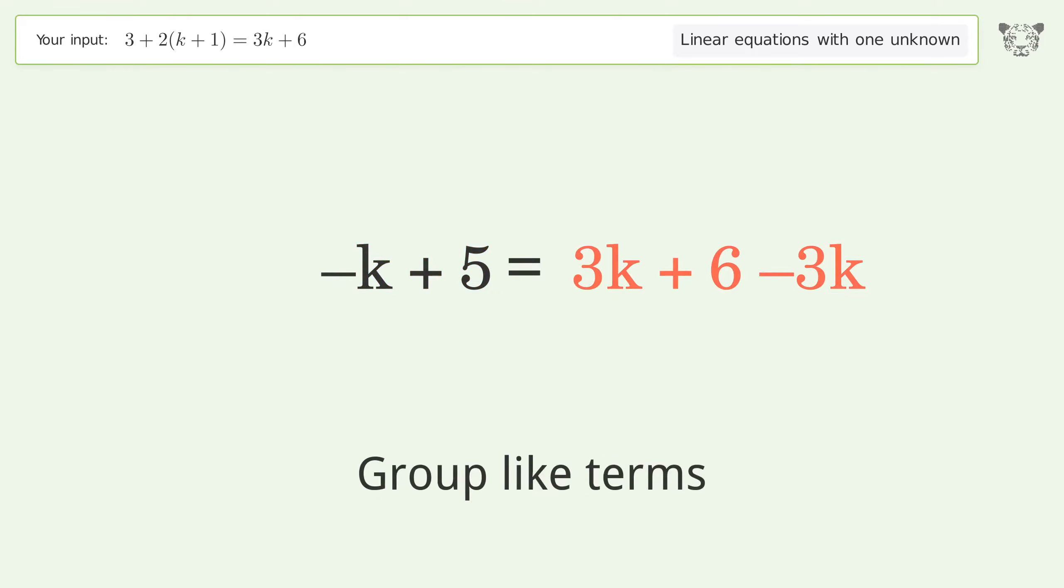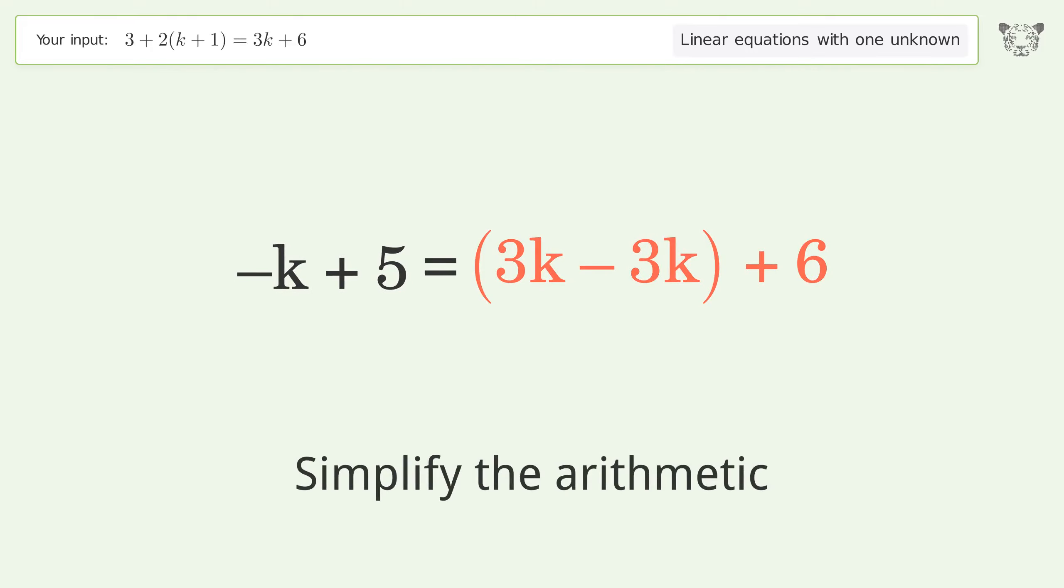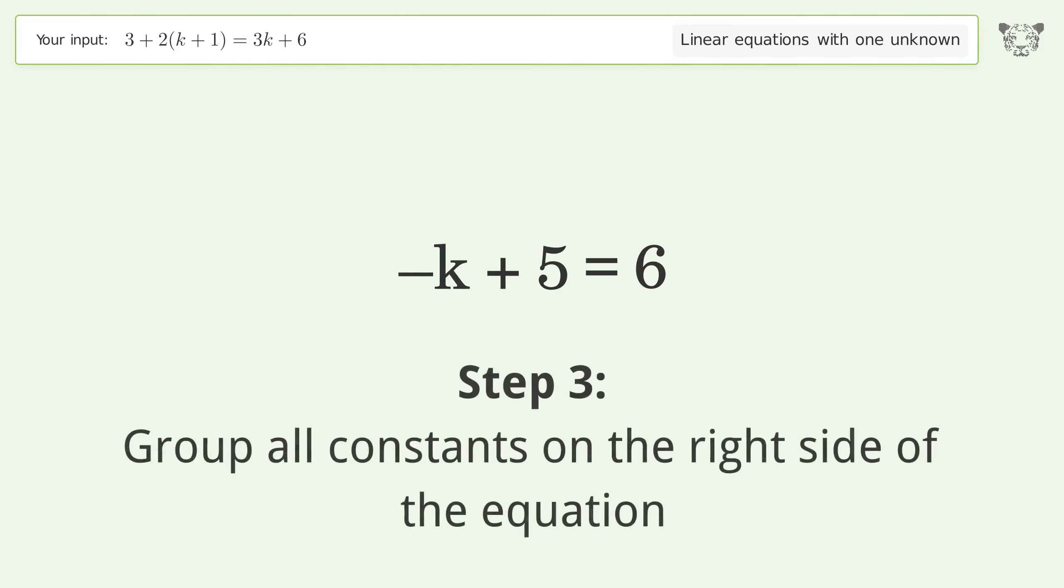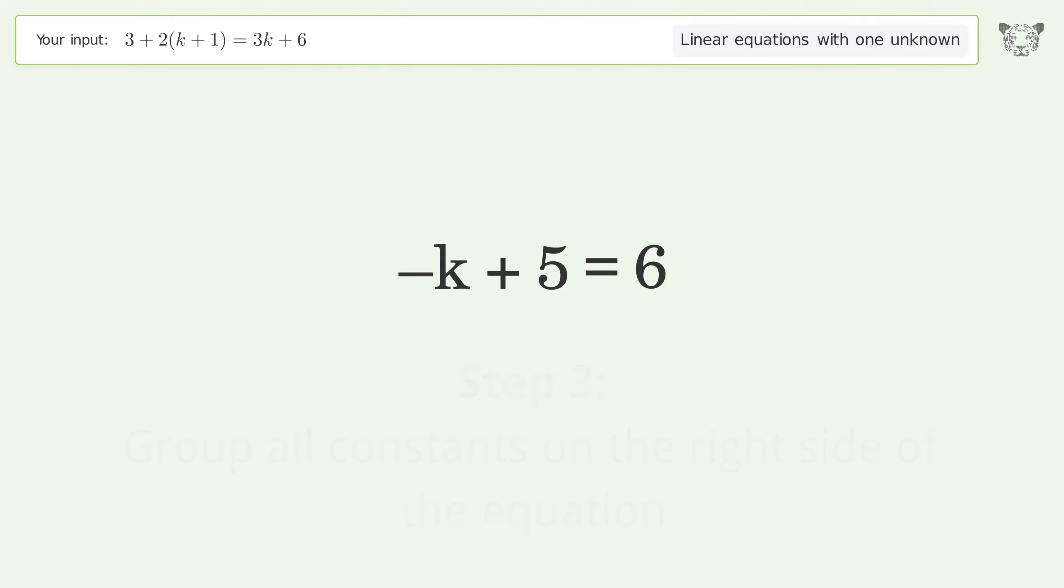Group like terms. Simplify the arithmetic. Group all constants on the right side of the equation. Subtract 5 from both sides. Simplify the arithmetic.